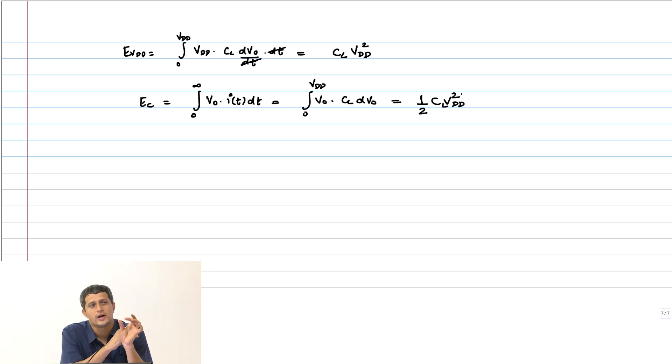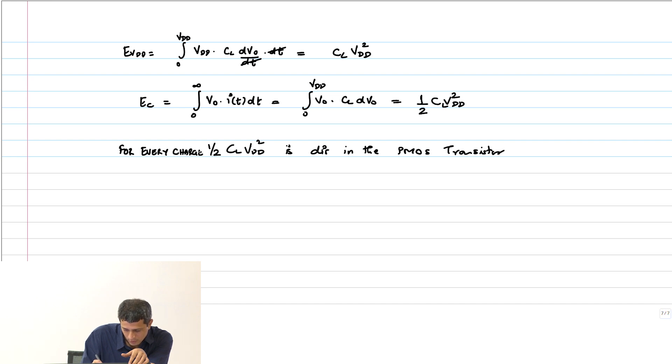So, the remaining half C V_DD squared where did it go? It dissipated in the PMOS resistance as heat and is lost. So, for every switching for every charging half C_L V_DD squared is dissipated in the PMOS transistor.